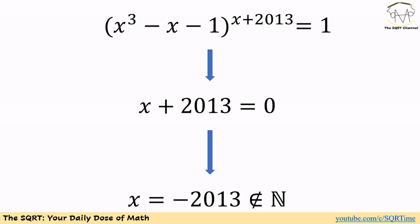If we solve x + 2013 = 0, then x = -2013. We are looking for a positive integer number, so this value is not acceptable.